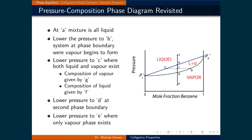To understand this phase diagram, let's trace down from A to E. At A the mixture is all liquid. As we lower the pressure to B and reach the phase boundary, vapor begins to form. At C both liquid and vapor coexist: the composition of the vapor is given by the mole fraction at point G, and the composition of the liquid by the mole fraction at point F. Lowering the pressure to D hits the next phase boundary. At E only the vapor phase exists.